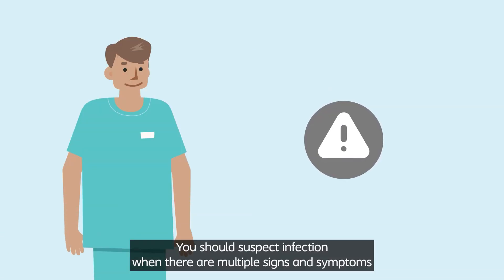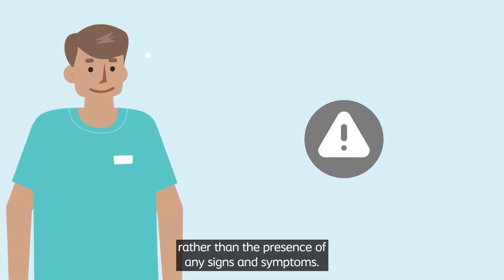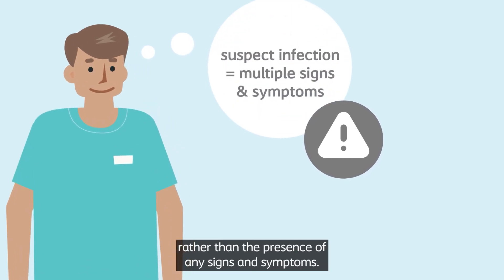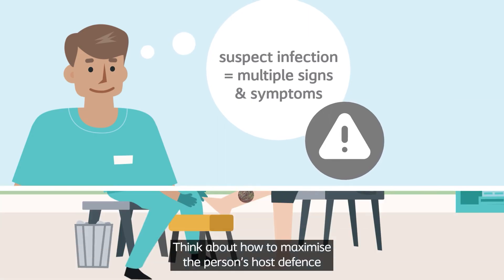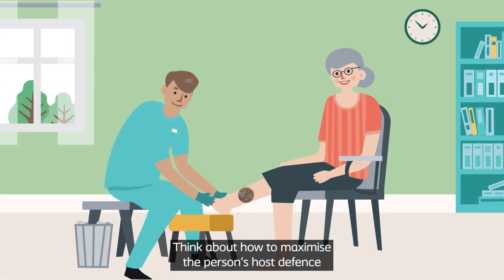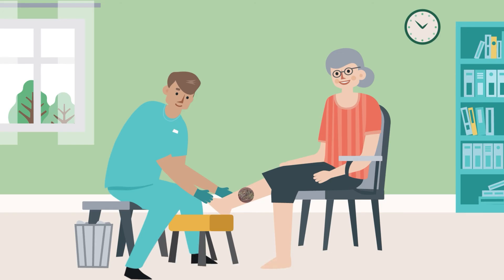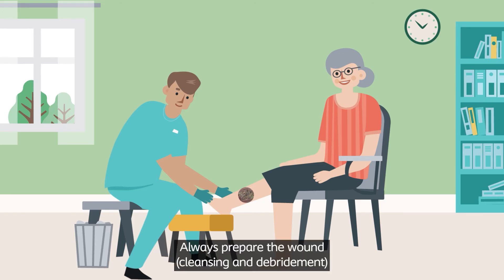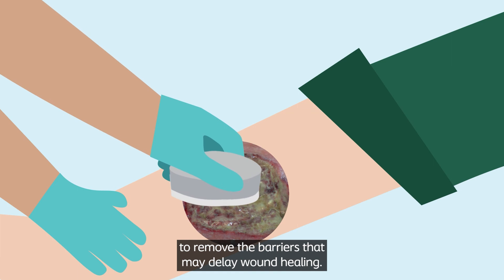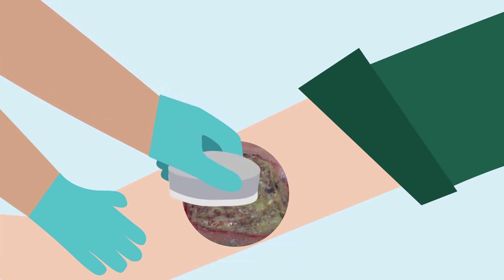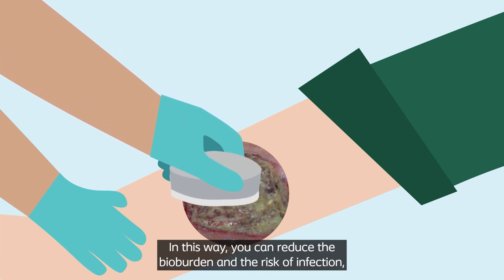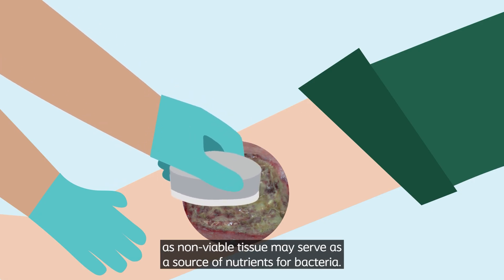You should suspect infection when there are multiple signs and symptoms rather than the presence of any single sign or symptom. Think about how to maximize the person's host defense against infection as part of your holistic wound assessment. Always prepare the wound to remove barriers that may delay wound healing. In this way, you can reduce the bioburden and the risk of infection, as non-viable tissue may serve as a source of nutrients for bacteria.